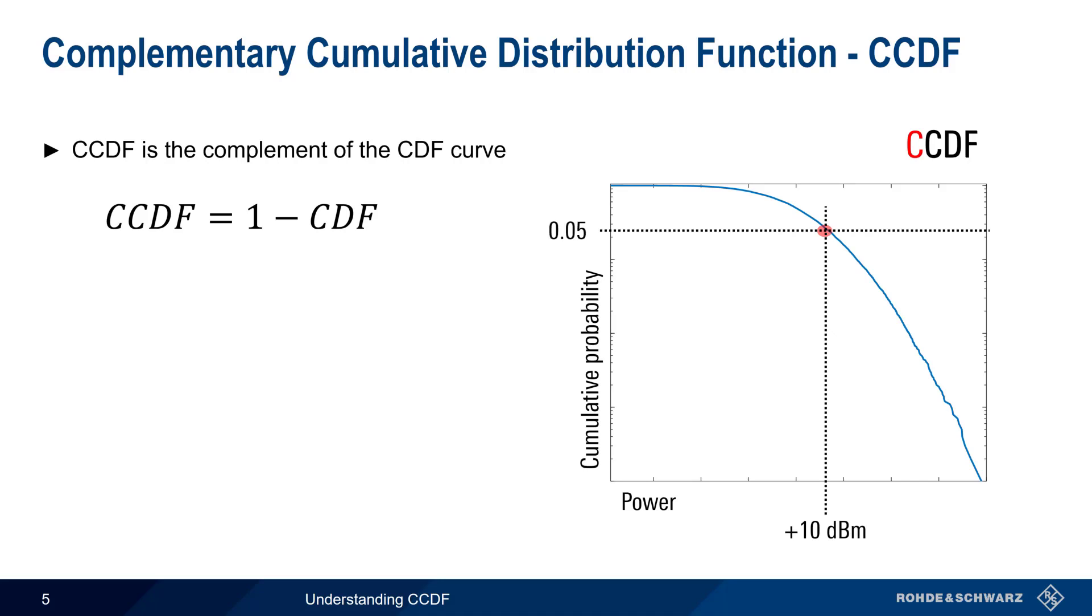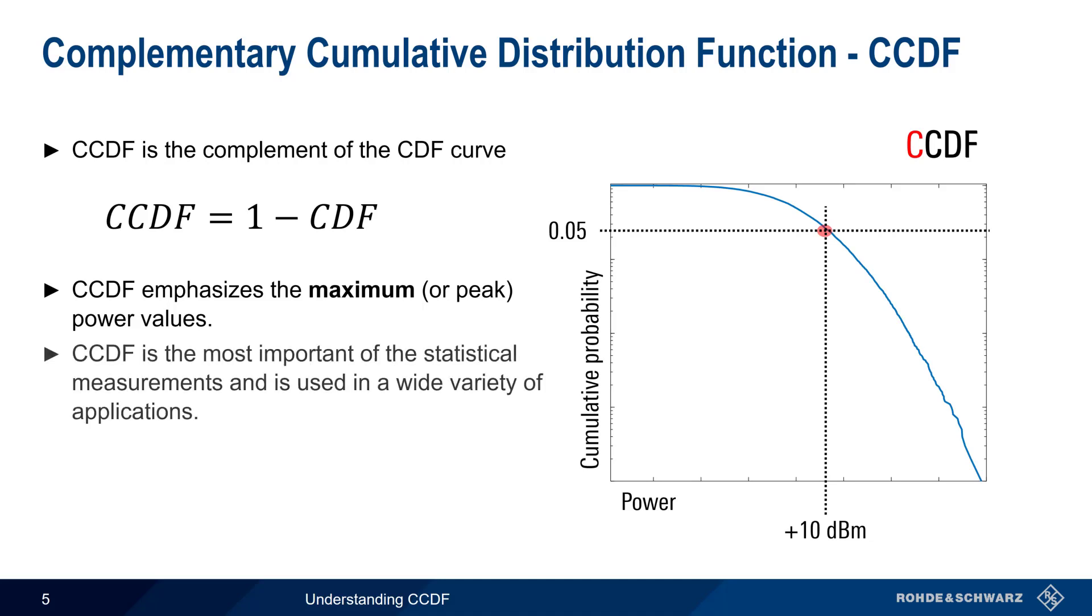This means that our signal power reaches plus 10 dBm or higher only 5% of the time. For this reason, we say that CCDF emphasizes the maximum or peak power values, since it tells us what percentage of time the signal's power is at or above a certain value. And because we're usually more concerned with maximum power values than minimum power values, CCDF is the most common and the most important of the three statistical measurements.